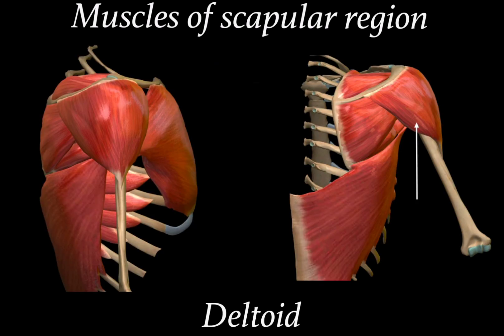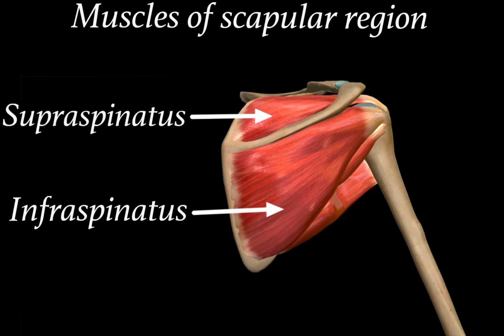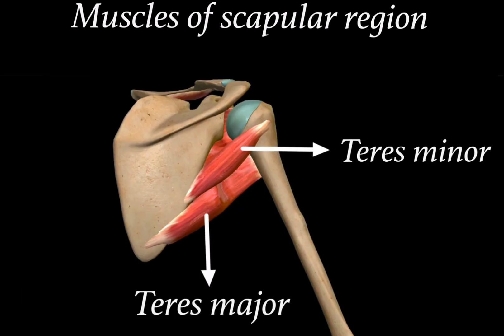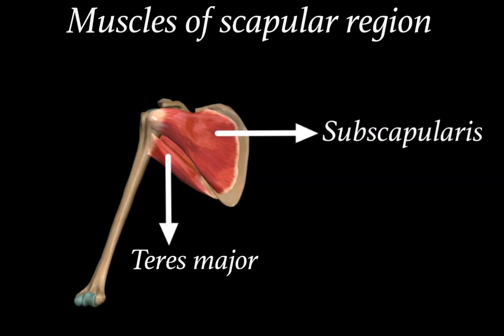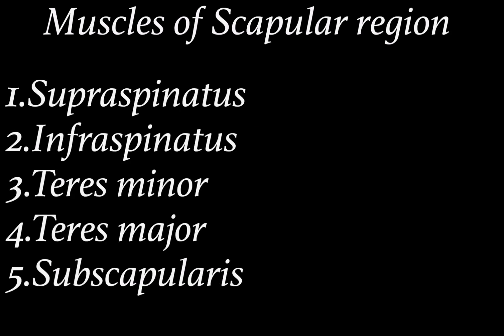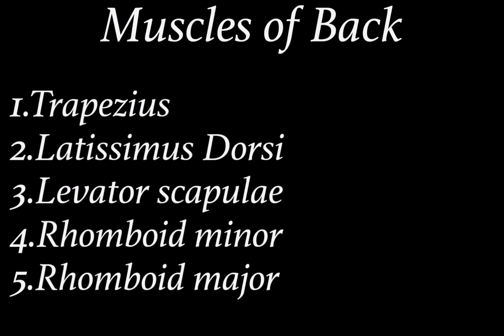Muscles of the scapular region — the first muscle is the deltoid muscle. In this figure you will find the lateral and posterior view of the deltoid muscle. On the posterior aspect we find supraspinatus superiorly and infraspinatus inferiorly, attached to the posterior aspect of the scapula. When we remove both supraspinatus and infraspinatus, we find teres minor and teres major. From the anterior view of the scapula we find subscapularis muscle.